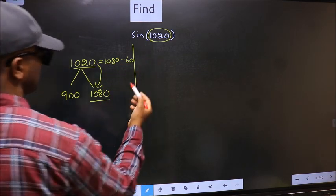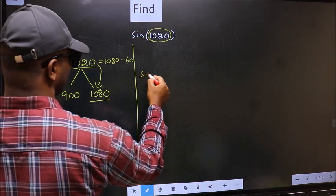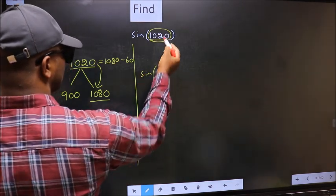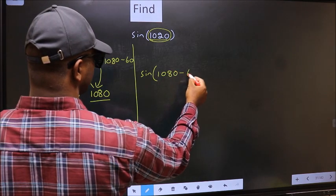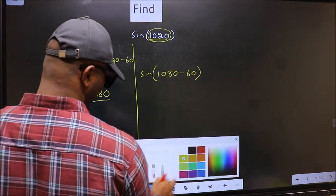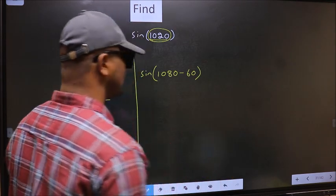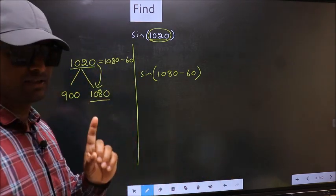So this will become sin. In place of this, we should write this one: 1080 minus 60. This is your step 1.